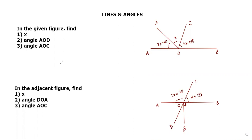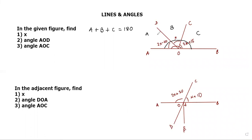The first question says: in the given figure, find x. Look at the diagram — a straight line angle means the total angle on the straight line, which is 180 degrees. So if this angle is a, this angle is b, and this angle is c, then angle a plus b plus c equals 180 degrees. That is what we studied about supplementary angles — the sum of angles on a straight line is 180 degrees.